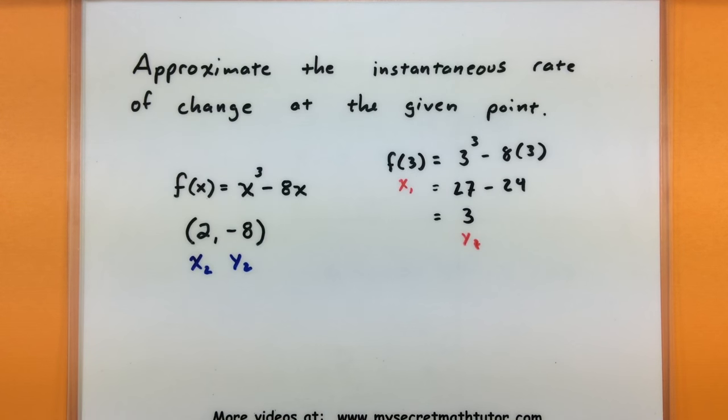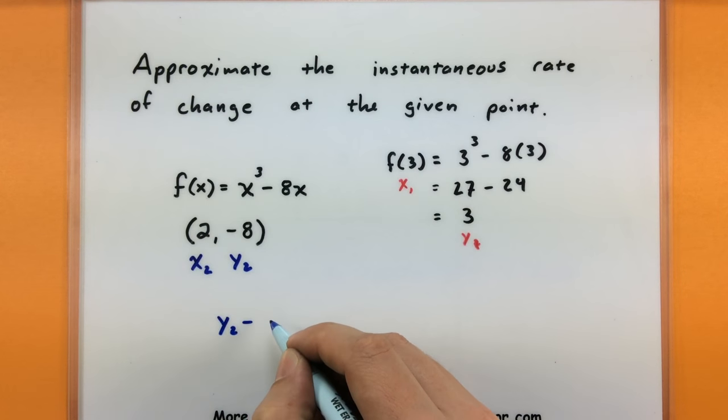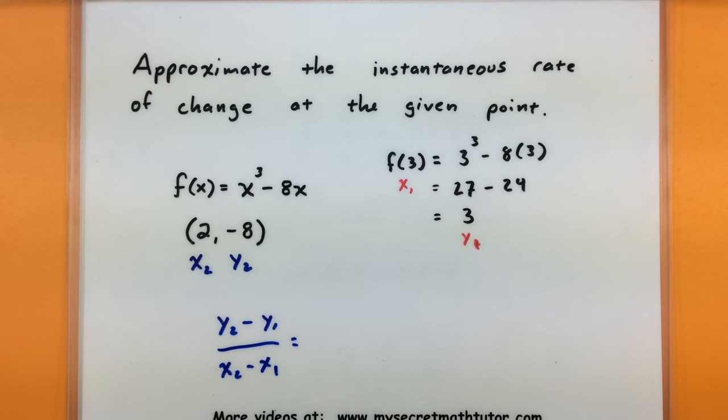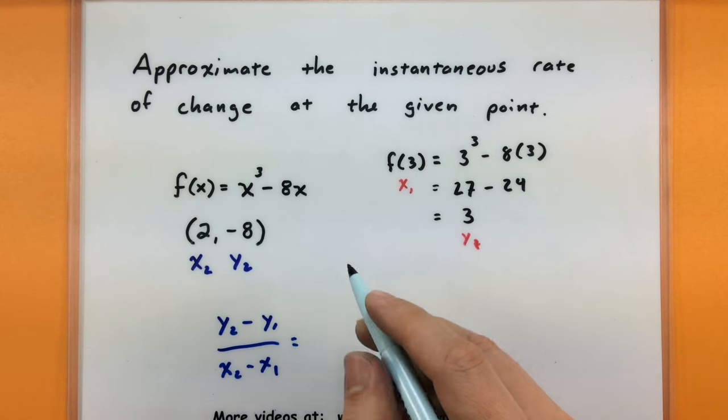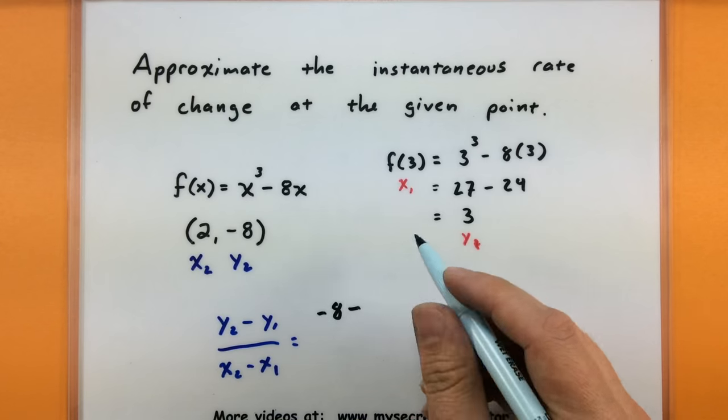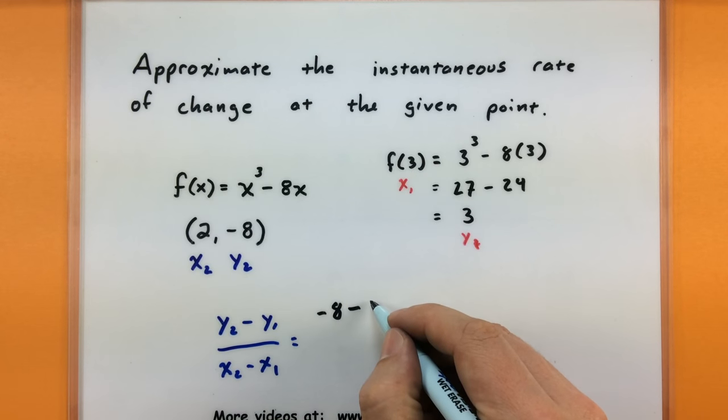Alright, now that we have two x values and two y values, now we can run through the process of finding the slope between these two points. So that's y2 minus y1 all over x2 minus x1. And note that the y2 and x2, I'm going to use the values that we were already given. So the negative 8 minus, we'll use our new y value over here, our 3. We have our x2 minus our x1, 3.